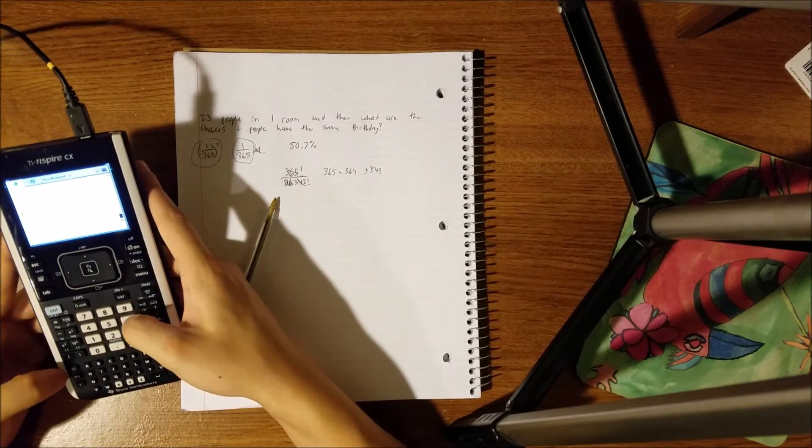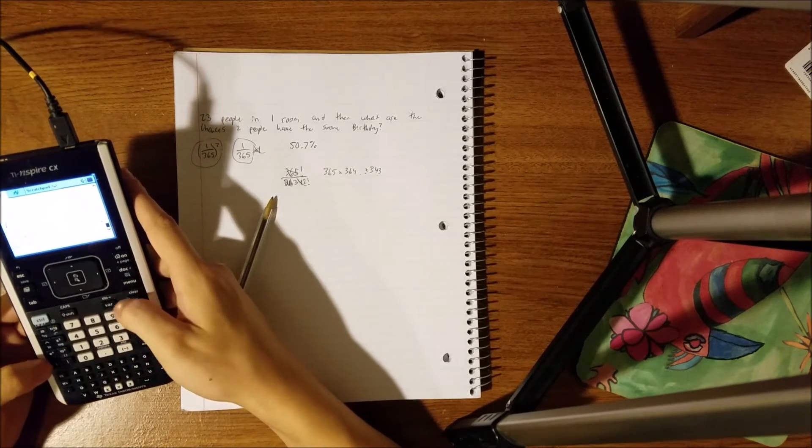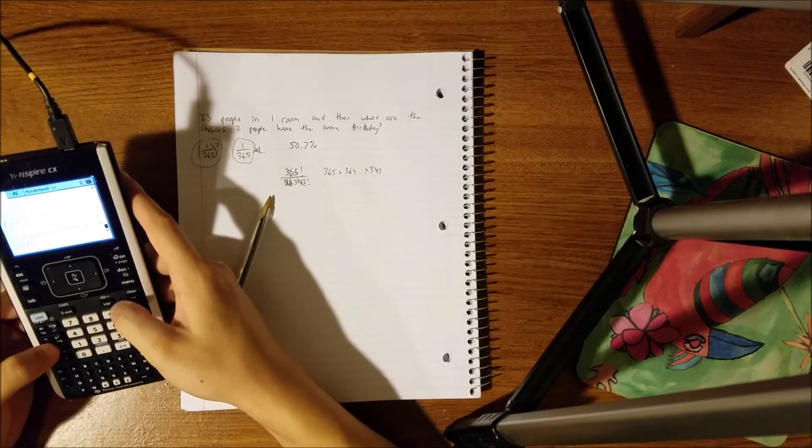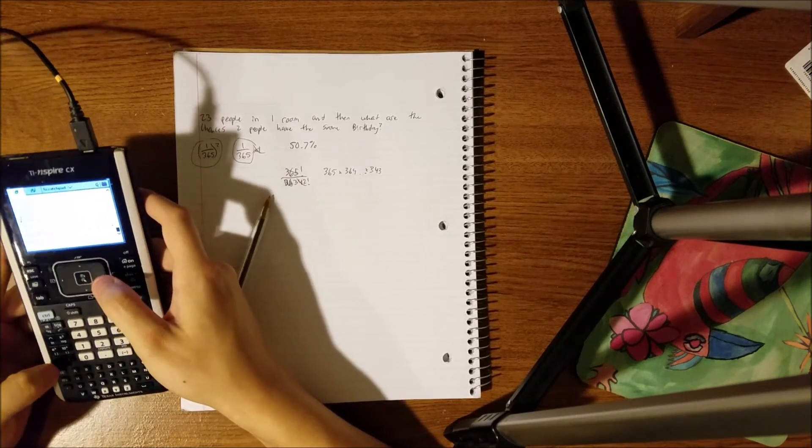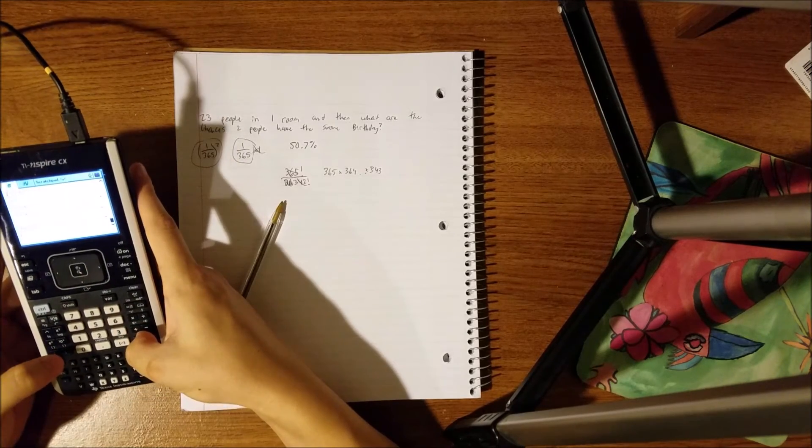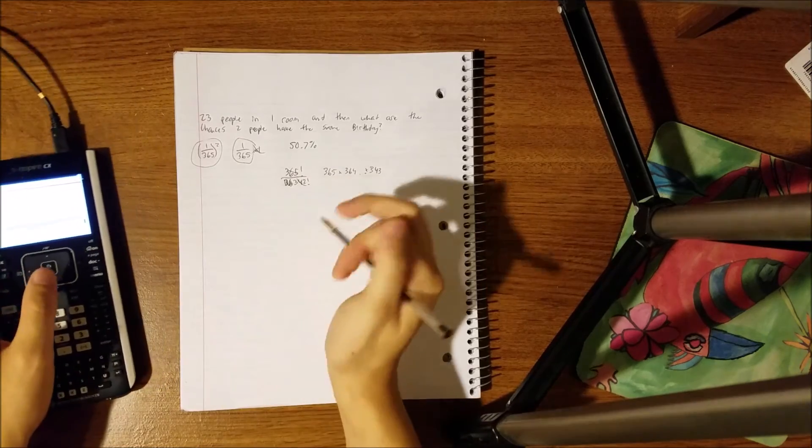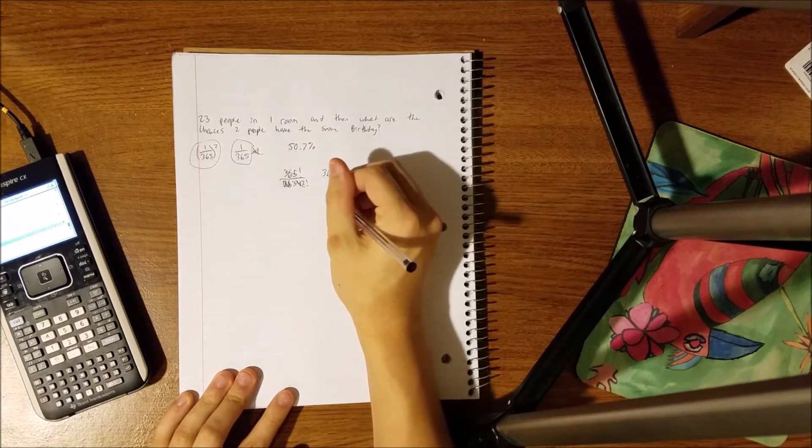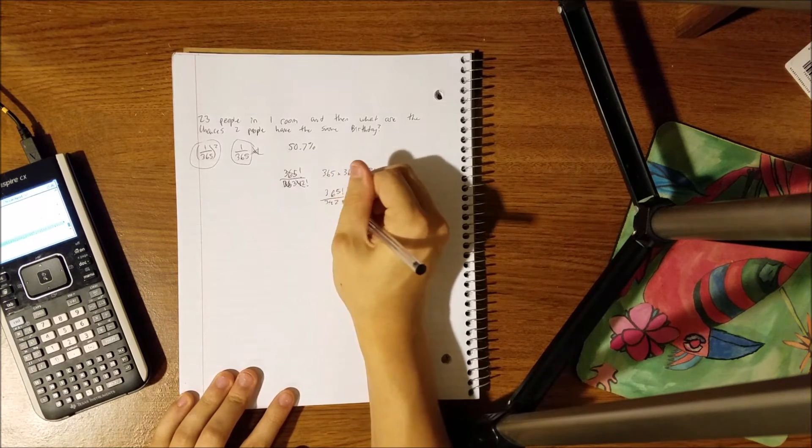and then we'll put this in parentheses, so it does this first, 342 factorial, enter. So that's still a huge number. All right, now we're going to do that huge number that we just got, which is 365 factorial over 342 factorial,